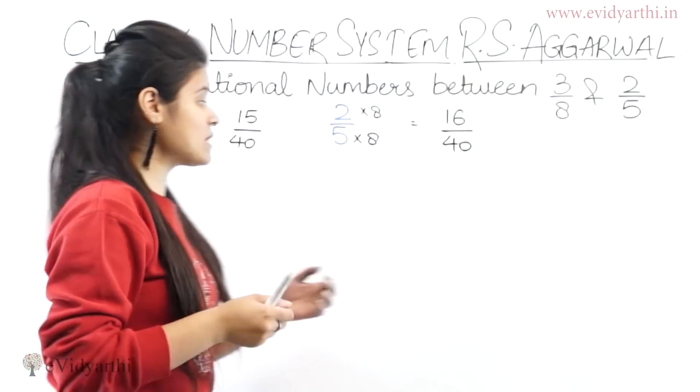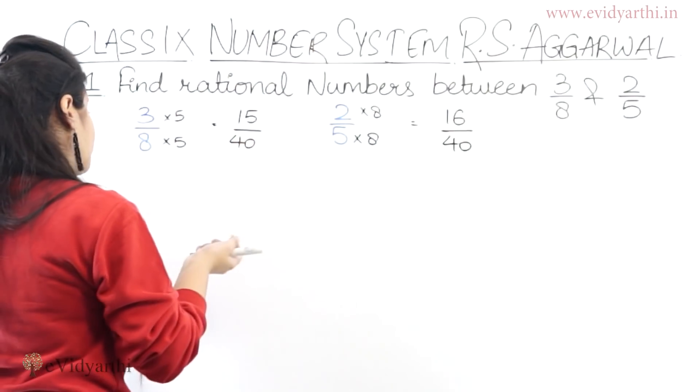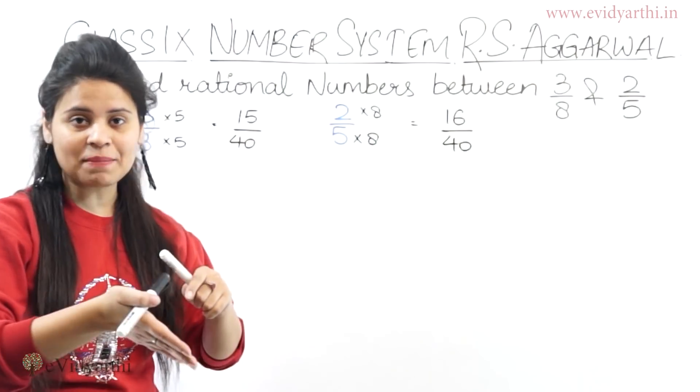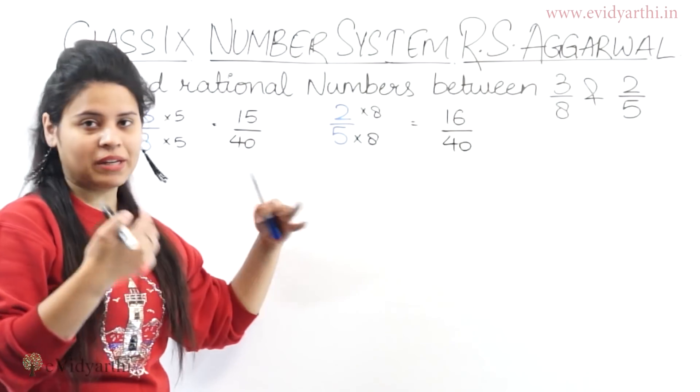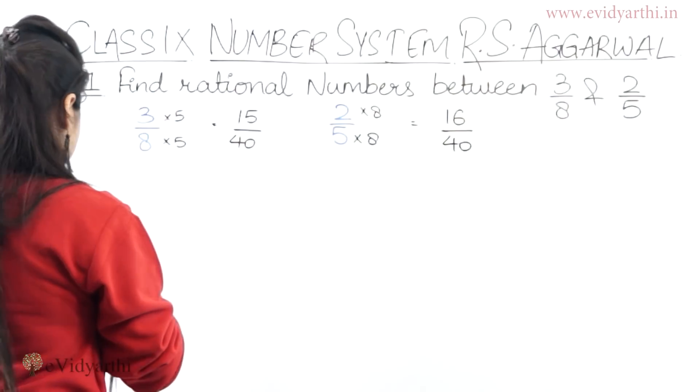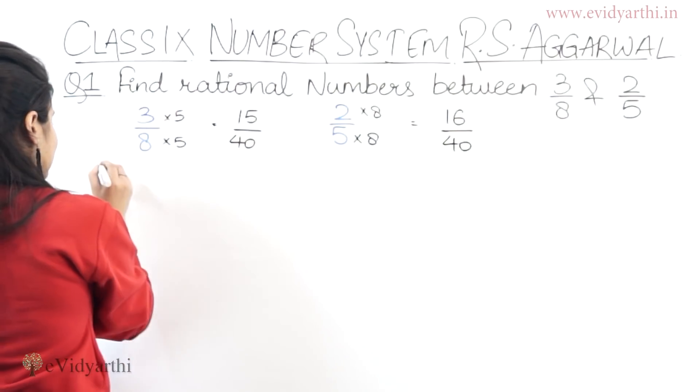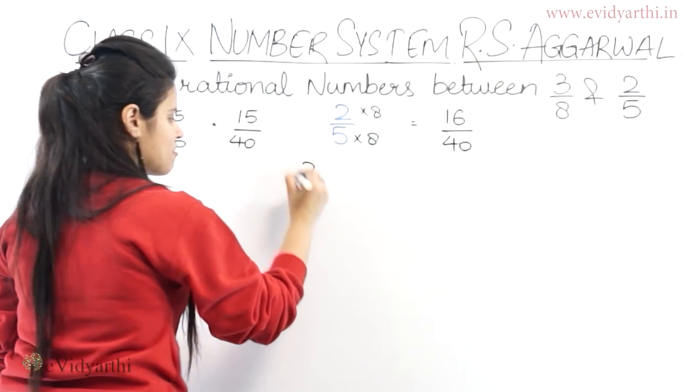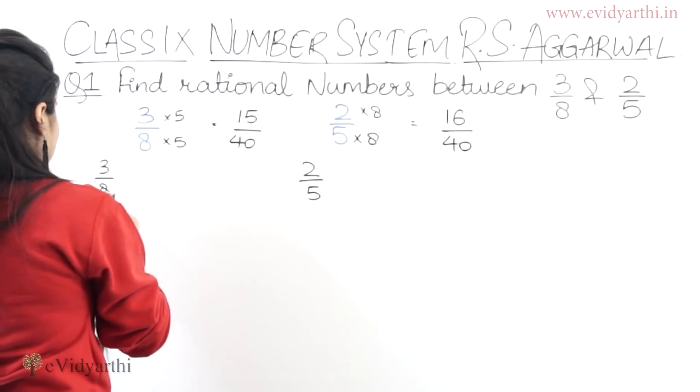So this means now what we need to do is we need to increase our denominator. So what can we do to make our denominator more common? 8 to 10 by 10, so we need to get 80. So, what do we need to do again? 3 upon 8 and 2 upon 5.